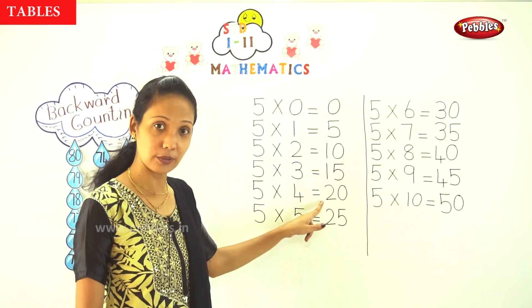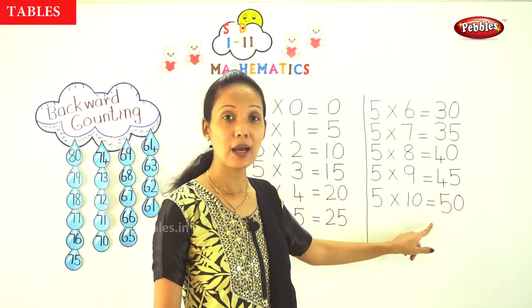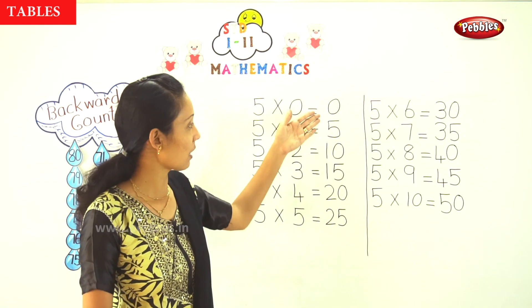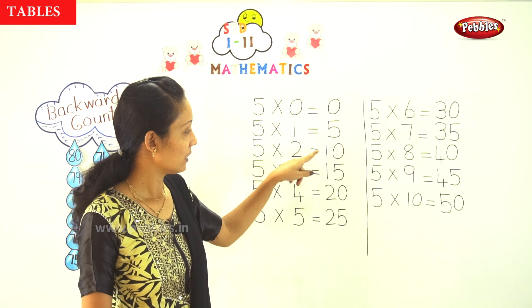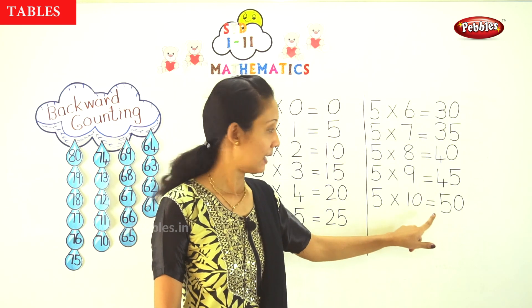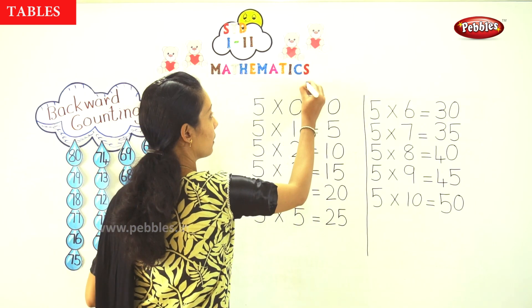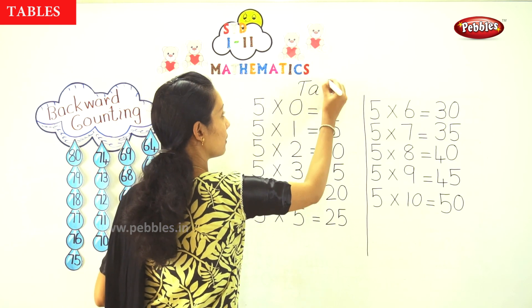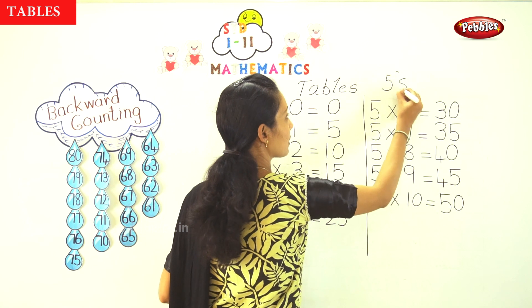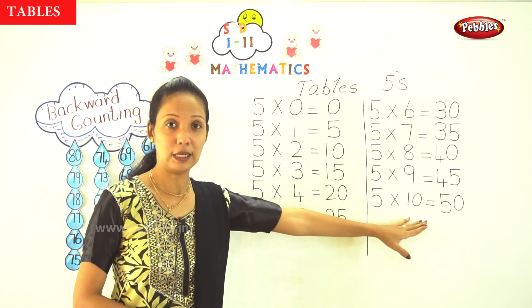So counting by 5s: 5, 10, 15, 20, 25, 30, 35, 40, 45, 50. If the 5 times table is in front of you, it is easy to learn because it is just counting by 5s: 0, 5, 10, 15, 20, 25, 30, 35, 40, 45, and 50. So this is what you learned today — the table of 5. This is the 5 times table. It is clear for you.